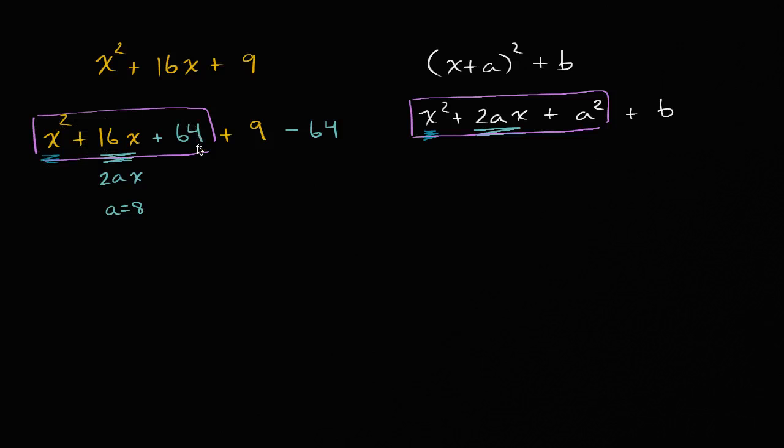And so the stuff that I just squared off, this is going to be x plus eight squared. x plus eight squared. Once again, I know that because a is eight, so this is x plus eight squared.